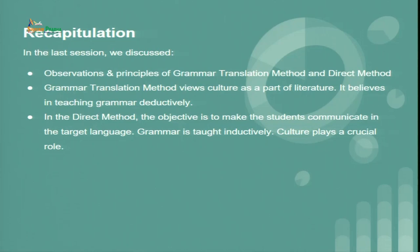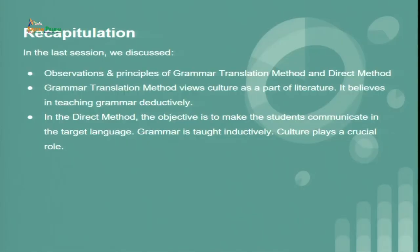In the last session, as you see in this slide, we studied the observations and principles of the grammar translation method and we also looked at the direct method. We understood that grammar translation method views culture as a part of literature, believes in language grammar, and adopted a deductive method of learning language. In the direct method, the objective is to make students communicate in the target language, grammar is taught inductively, culture plays a crucial role, and spoken communication is largely emphasized. However, in grammar translation method, reading and writing were the essential components for language learning.